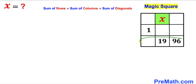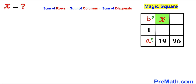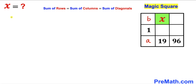We can see that this row and this column have more values, so we are going to consider this row and this column. Let me label this cell as lowercase a and this cell as lowercase b. We are going to find the values of a and b before we can find the value of x. Since we are dealing with this magic square, the sum of these values must be equal to the sum of these values in this row.